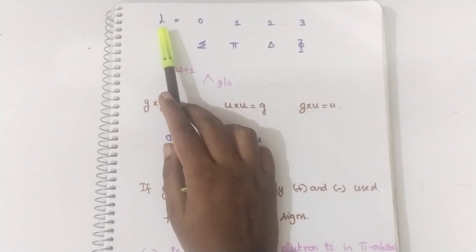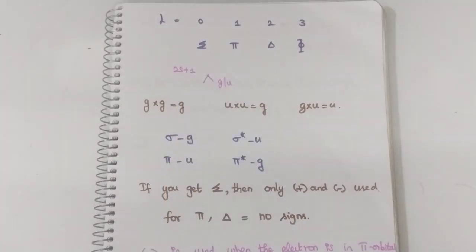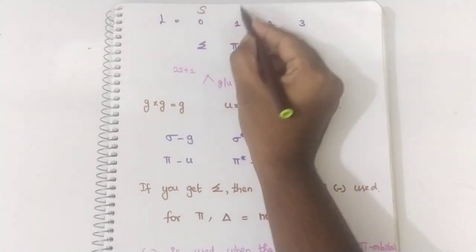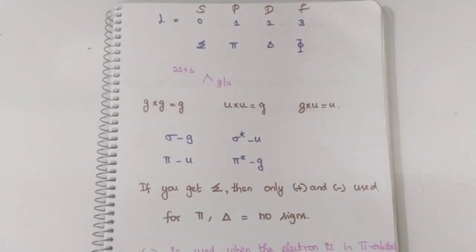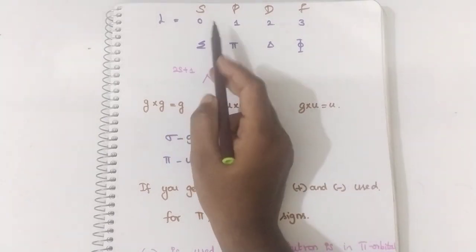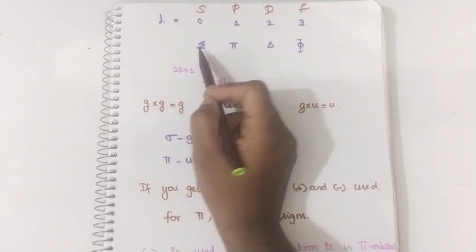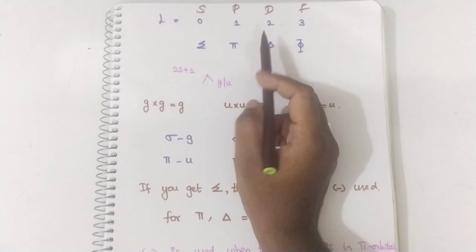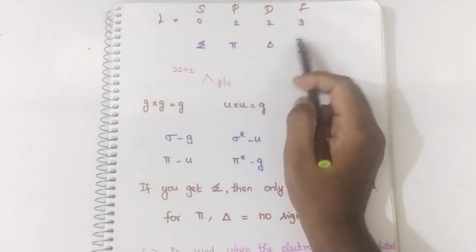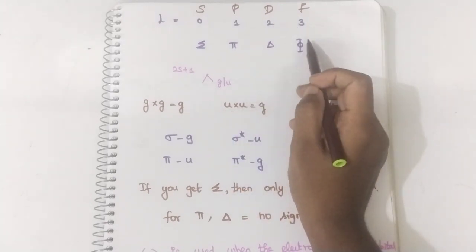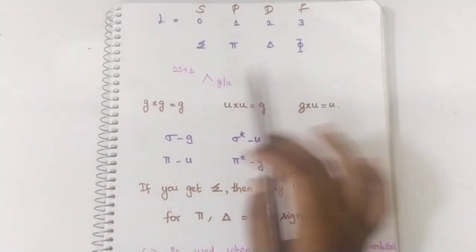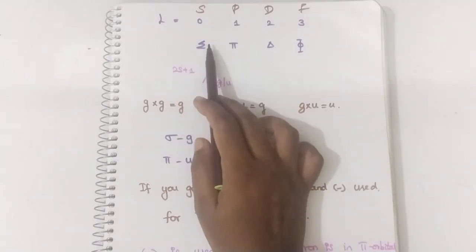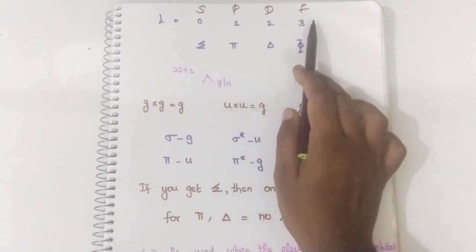In atomic term symbols, if L is 0 it will be S; L=1 is P, L=2 is D, L=3 is F. In case of molecular term symbols for diatomic molecules, if L is 0 then it will be denoted by sigma. If it is 1, then pi. 2 means delta and 3 means phi. This is how you have to represent — L=0 is sigma, L=1 is pi, L=2 is delta, L=3 is phi.